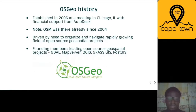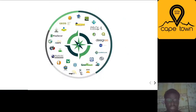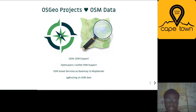OSGeo started in 2006 — OSM was in existence in 2004 — and it's driven by the need to organize and navigate the rapidly growing field of open source geospatial projects. Founding members included GDAL, MapServer, QGIS, GRASS, and PostGIS. OSGeo projects love OSM data — that's no doubt and a fact. GDAL, which is used in both commercial and open source software such as QGIS and many others, has out-of-the-box support for OSM data with PBF and OSM files.